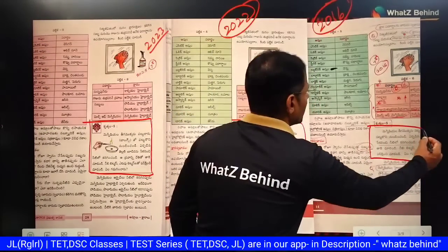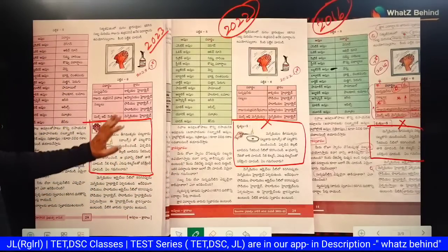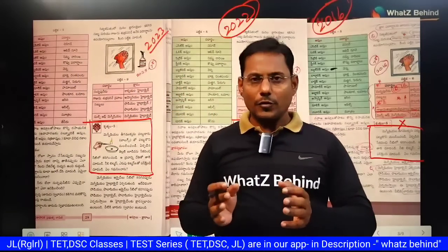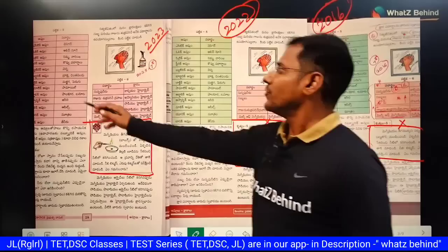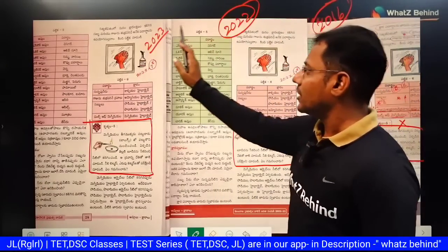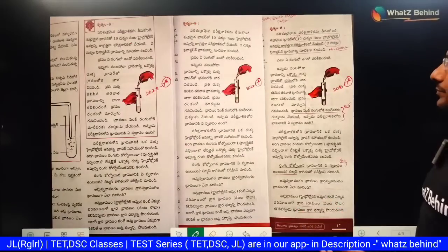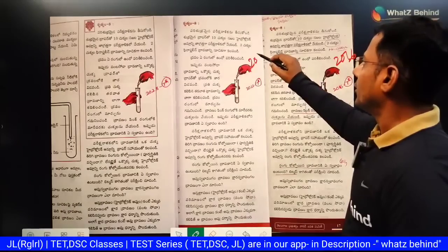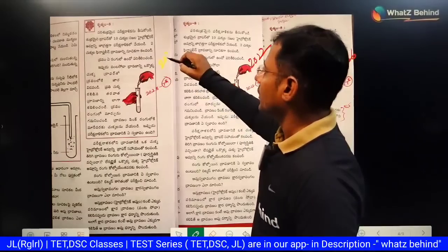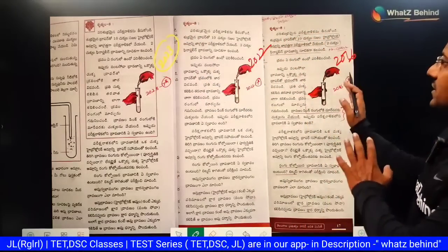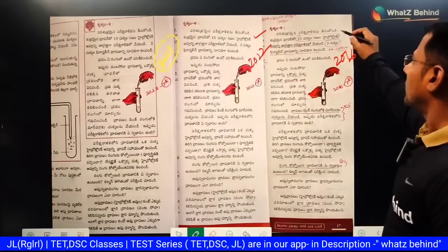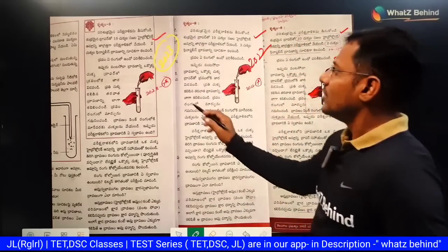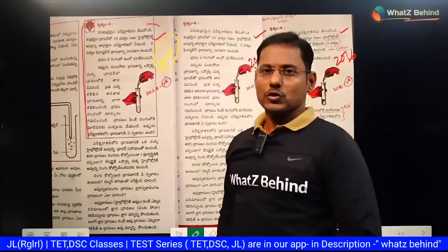This is the same information. This is the 2016 7th class book, this is the 2022 7th class book, and this is the 2023 7th class general science. Here we have the same information across all these editions.